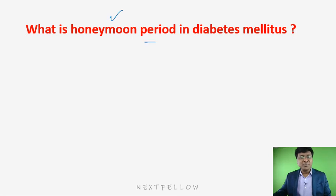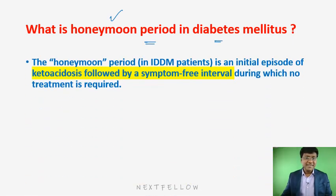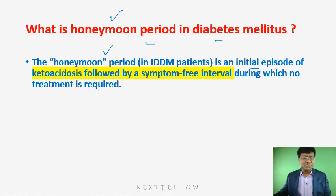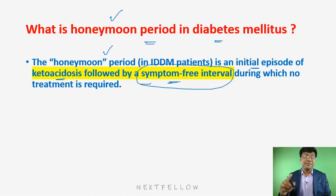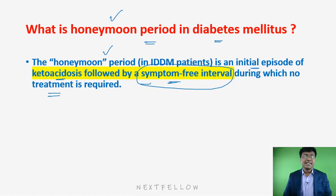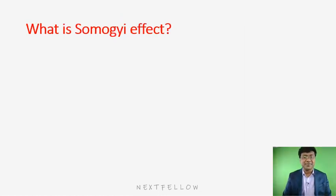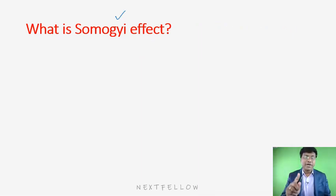The honeymoon period in diabetes mellitus refers to an initial episode of diabetic ketoacidosis followed by a symptom-free interval during which no treatment is required. Then two important phenomena: the Somogyi effect and the Dawn phenomenon.